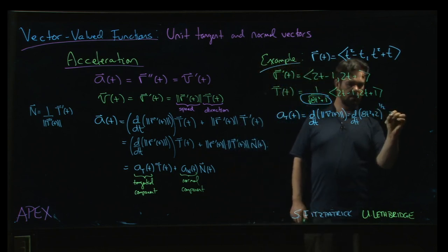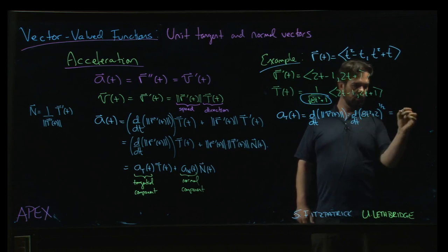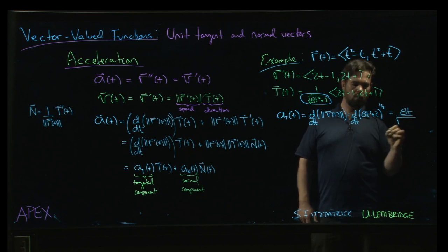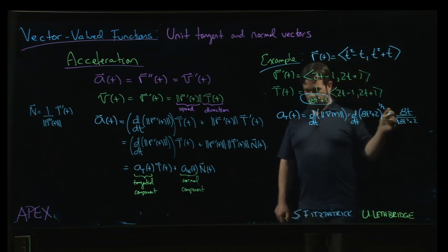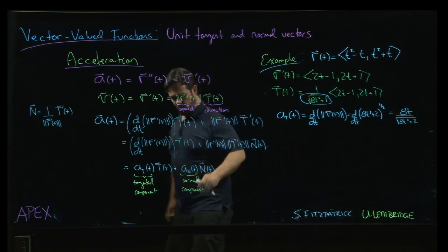we're going to have 16t times a half, sorry 16t, so it's going to be 8t over the square root of 8t² plus 2, once you simplify. Okay? Alright, so there's the tangential component.